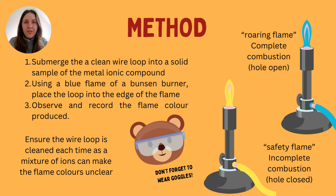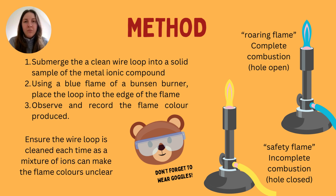The method is as follows: submerge a clean wire loop into the solid sample you're going to investigate. Many metal ions come in a white powder form, making them hard to identify without a flame test. As you place the substance next to the flame — not directly into it, but just to the side — you should see a change in the flame's color, and this is because of the type of ion present in the substance.